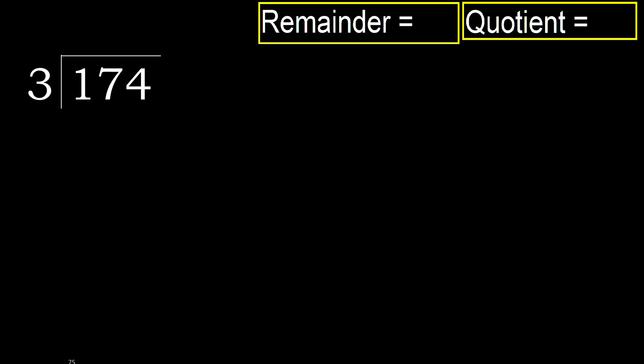174 divided by 3. 1 is less, therefore next. 17 is not less, therefore work with 17. 3 multiplied by which number is nearest to 17 but not greater?